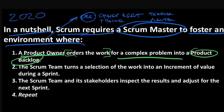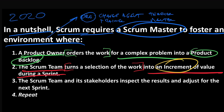The Scrum team is going to take that ordering. They're going to grab a selection of that work that's been ordered, and they're going to try to turn that into an increment of value during a sprint. They're going to create an increment — which, by the way, is another one of our artifacts.